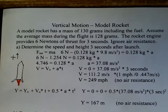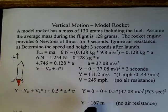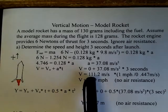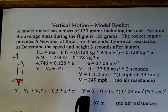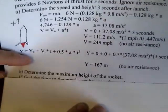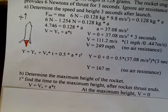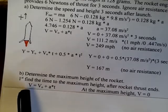Is 167 meters the maximum height of the rocket? Think about this: when the rocket reaches the 167-meter point, its speed is not zero — it's still traveling upward at 111 meters per second. The rocket engine thrust is now zero, but the rocket doesn't stop. It continues upward under gravity alone. We need to find how much higher it will go.